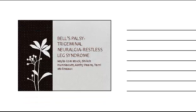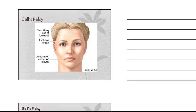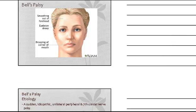When we look at this picture, we see some smoothing out of the forehead, eyelid droop, and drooping of the corner of the mouth. You'll also see eyelid droop in some other disorders, and we have to distinguish which one of the nervous system disorders it is in our differential as we diagnose and see patients.